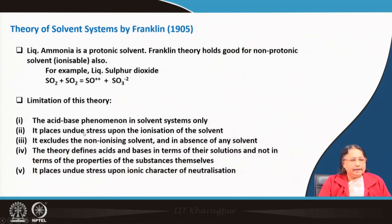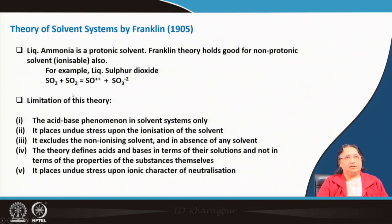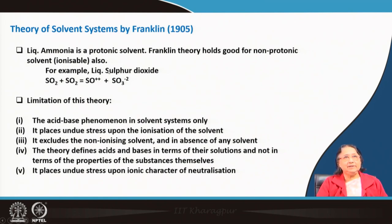We know that ammonia is a protonic solvent, but there are some solvents that are non-protonic. For example, liquid sulfur dioxide — in liquid sulfur dioxide we do not have any proton. This is also explained by Franklin. Something in liquid sulfur dioxide which gives the cationic part, that is the thionyl group, will be an acid, and something which gives the sulfite ion — SO₃²⁻ — will be called a base.